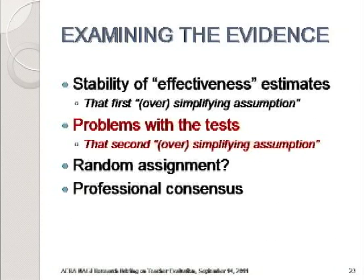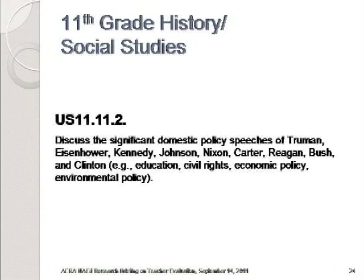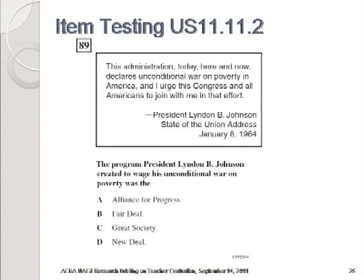Turning to my second topic, I'll show you just two released items from the California standards tests — one each from history and algebra. Before each item, I'll show you the standard that it was supposed to measure. Here's a U.S. history standard for 11th graders: the standard says to discuss the significant domestic policy speeches of various presidents on a variety of different important policy topics. Just notice the verb 'discuss.' But the item is a multiple-choice item, so there can't really be any discussion — what this item actually calls for is just paired associate learning. A chart with rows for each president, columns for each policy area, and names of programs in the cells would be all a teacher would need to nail any item of this kind for this objective.